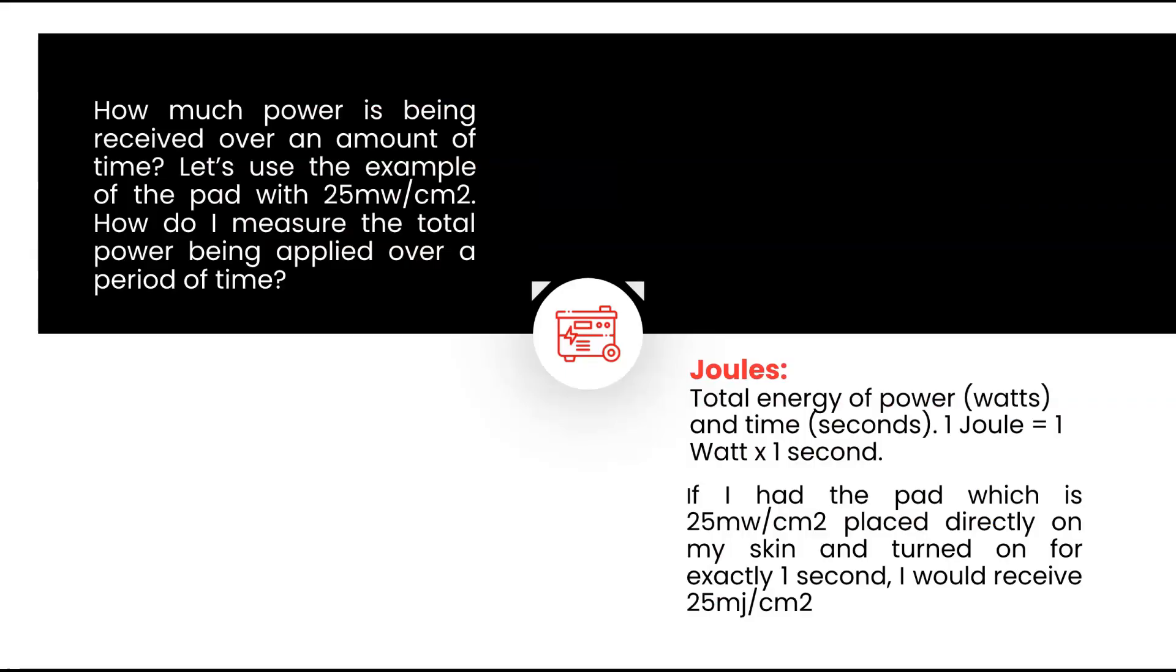We now understand how much power is being put out by the device at the surface as well as at a distance. But this only tells us half the story. The next question is, how much power is being received over an amount of time? Why is this important? Because it takes time for all those photons to be absorbed into our bodies. We measure this with joules. Joules is the total energy of power or watts and time in seconds. So 1 joule equals 1 watt times 1 second.